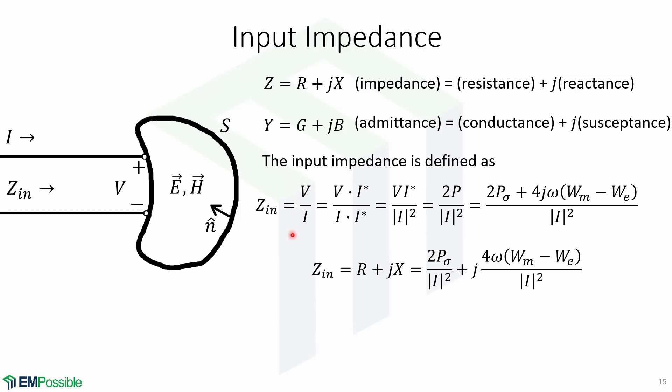The input impedance is defined as the ratio of V over I. We can multiply by the conjugate of the current to obtain this expression. And recall that V times the conjugate of I is equal to 2P. Remember that P is equal to this expression.